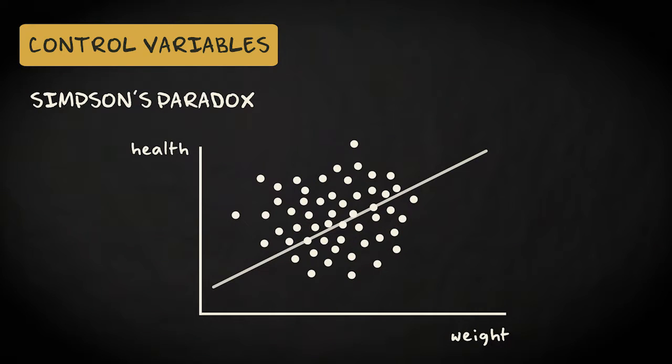For example, if we look at the relation between health and weight in a group of four-year-old cats, we might find this scatterplot, suggesting a positive relation. Heavier cats are healthier.